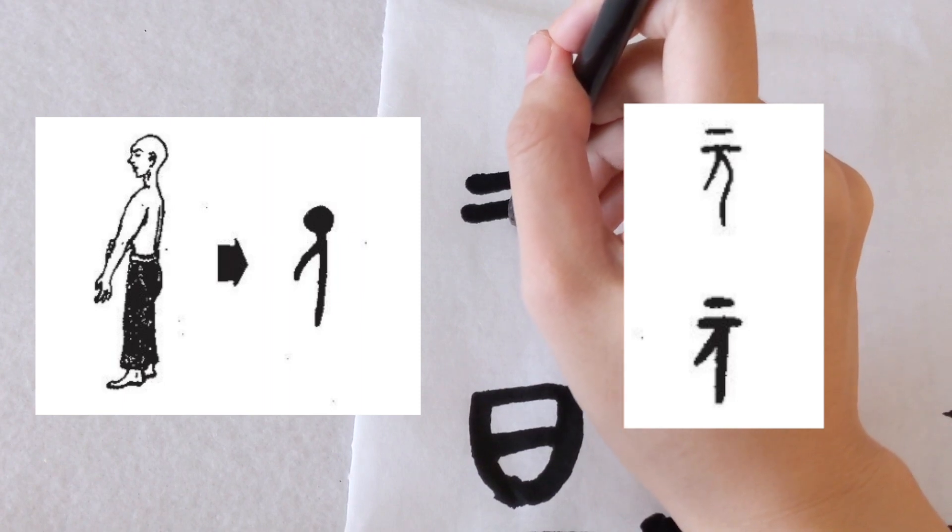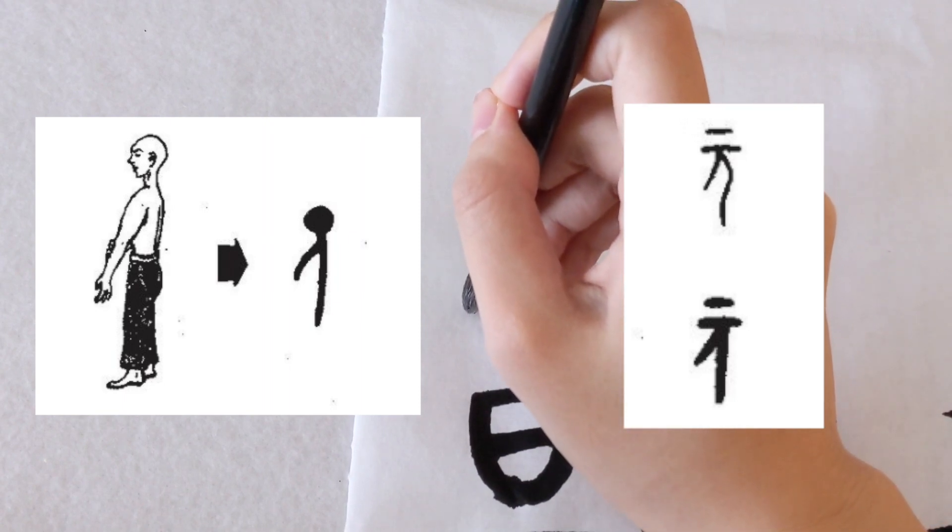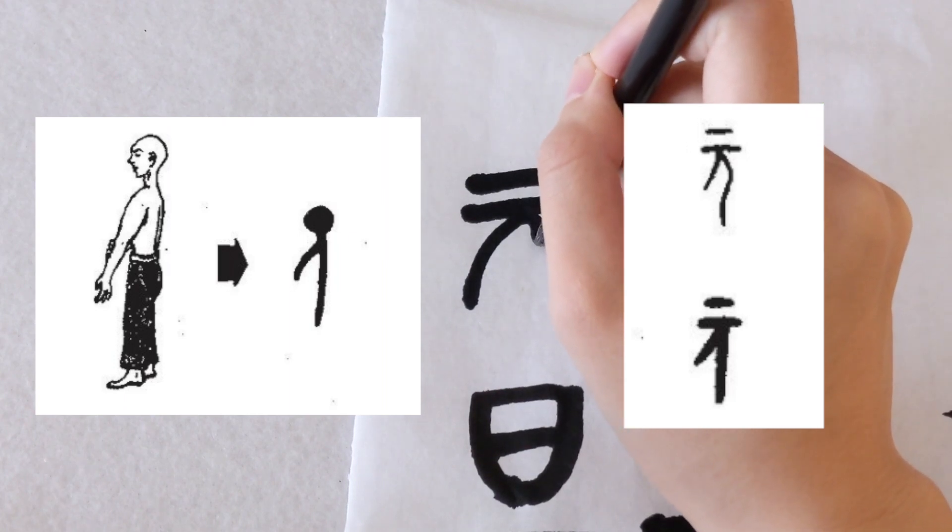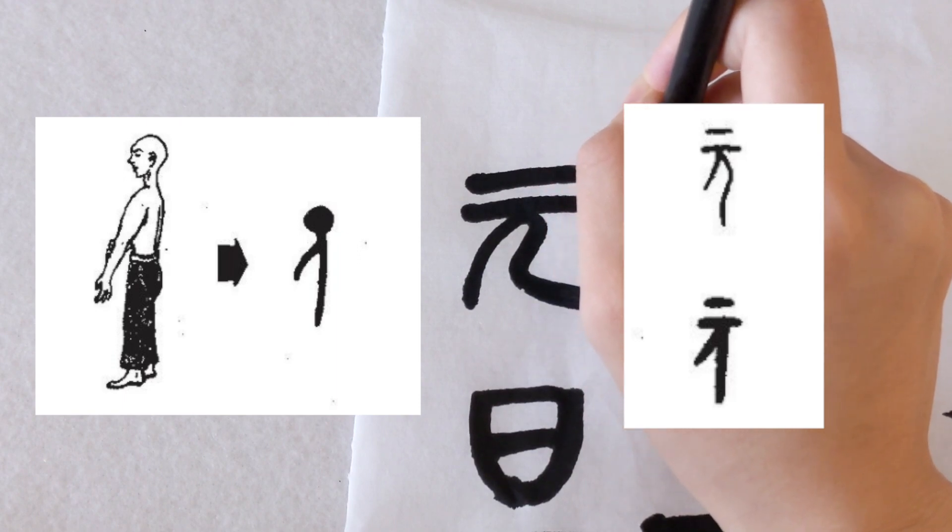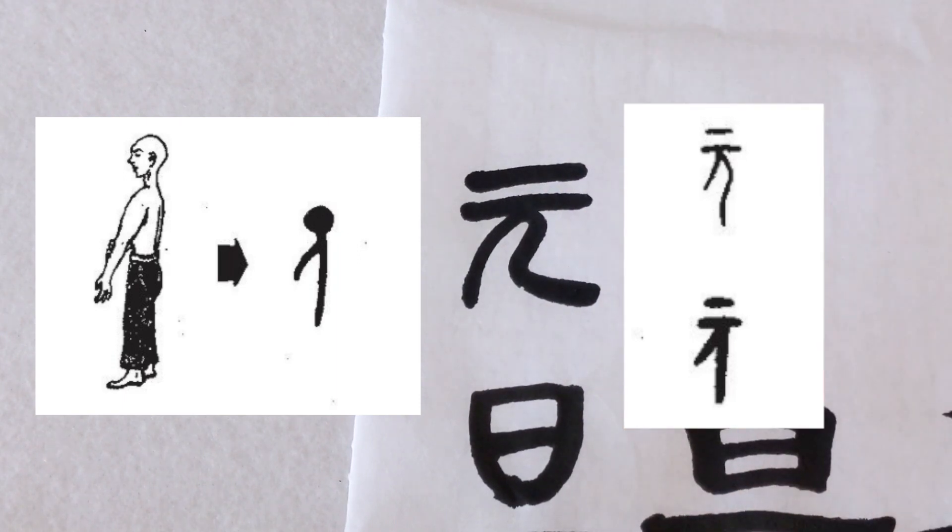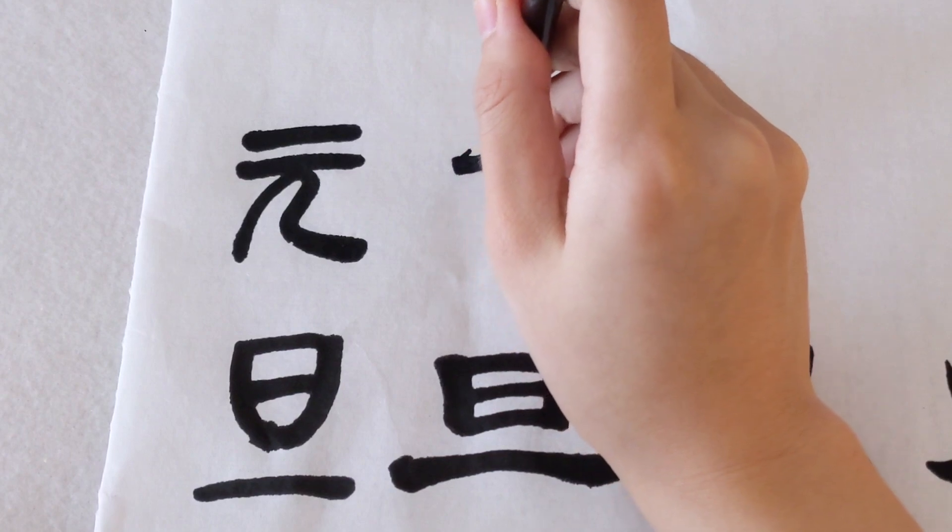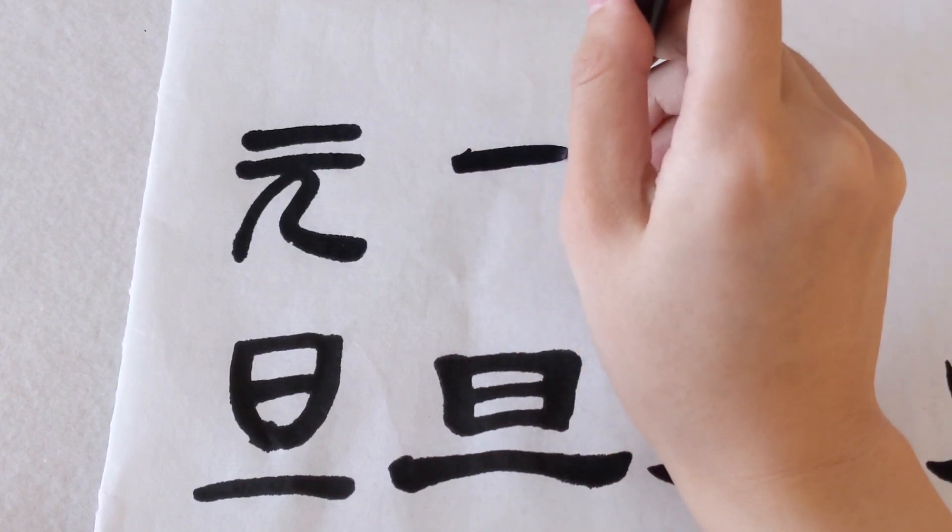To have a more sturdy or balanced character, it evolved into the seal script. Then in clerical script, we bring in more variations in the thickness of a stroke.